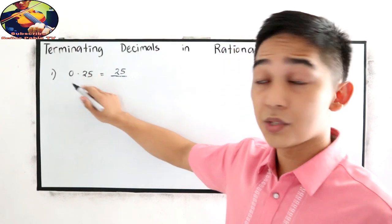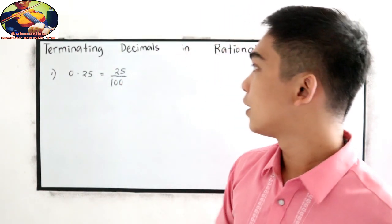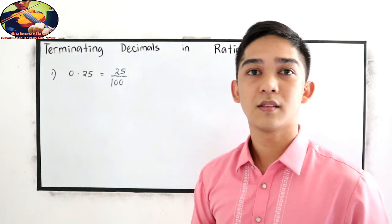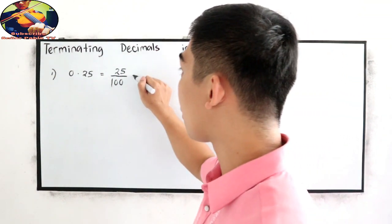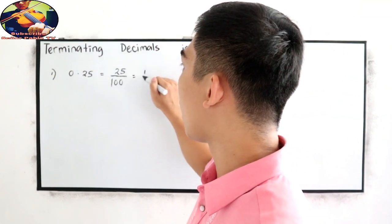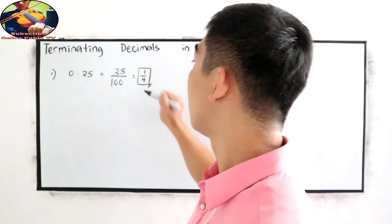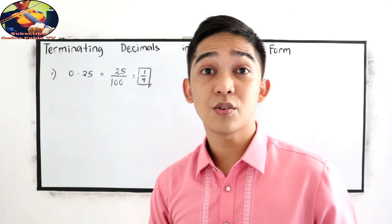So replace it to 0. So 1, 2, then write 1. So 25 over 100. Of course, we can simplify this one. Our final is 1 over 4. Always write your answer into simplest form.